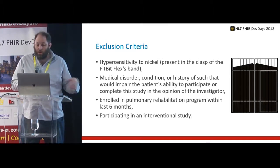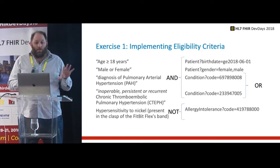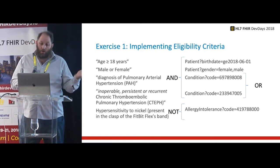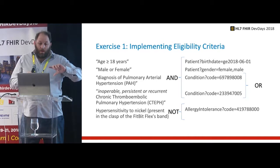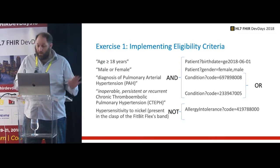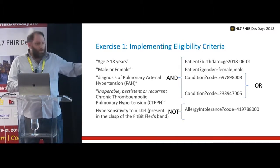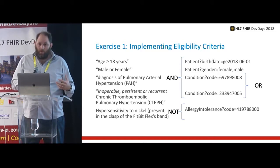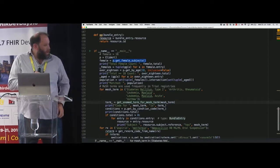Similarly on the exclusion side — 'hypersensitivity to nickel' simply means one of the interventions uses a Fitbit which has nickel, so you don't want to admit those patients. Or: 'any medical condition that would impair the patient's ability to participate in the opinion of the investigator' — try turning that into a series of where-if statements. Taking simpler examples: age greater than 18, male or female, a condition expressed as OR, and a NOT exclusion. Composing those into a series of queries becomes quite difficult.